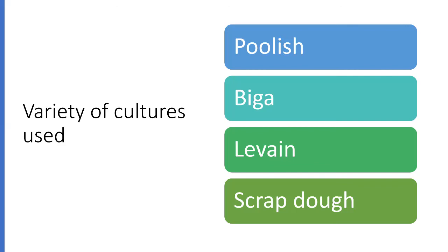The last type is scrap dough, which is simply a piece of fermented bread dough saved from a previous batch. Saving a piece of fermented dough, preferably in the retarder so it doesn't over-ferment, is an easy and common way to get the benefits of using a pre-ferment without actually having to make one. Because scrap dough is actually bread dough, it differs from other pre-ferments in that it contains salt as well as flour, water and yeast. The salt slows the fermentation, so to balance the salt, scrap dough contains more yeast than the other types of pre-ferments.